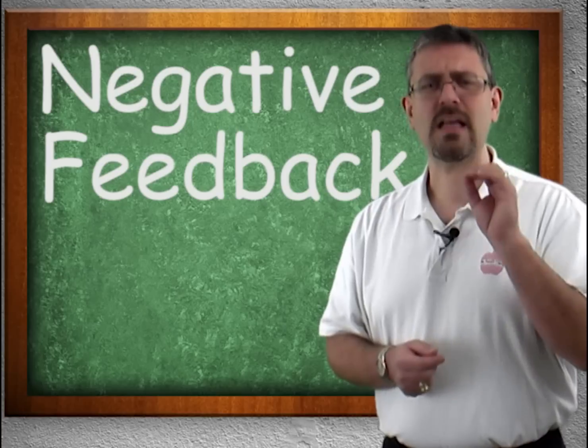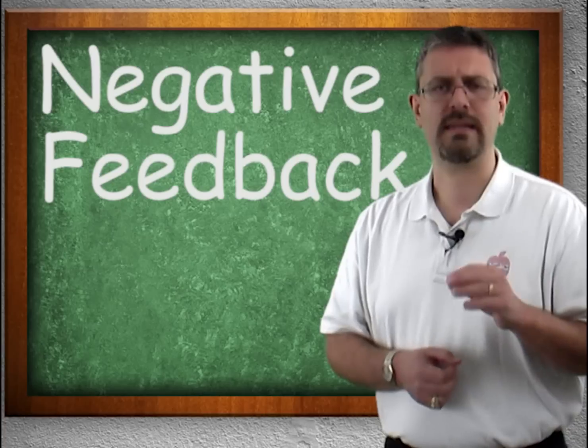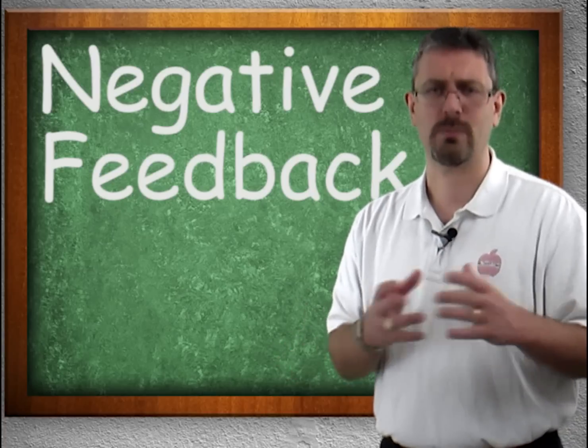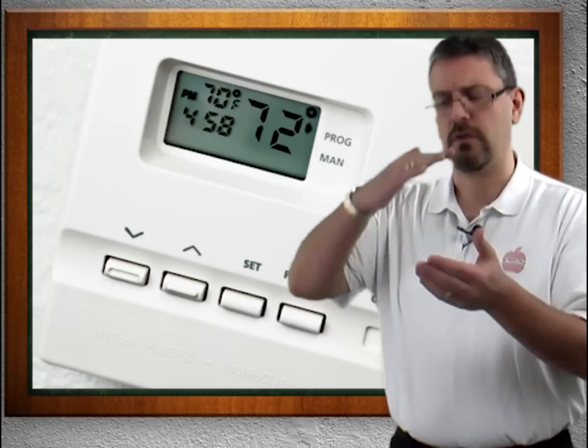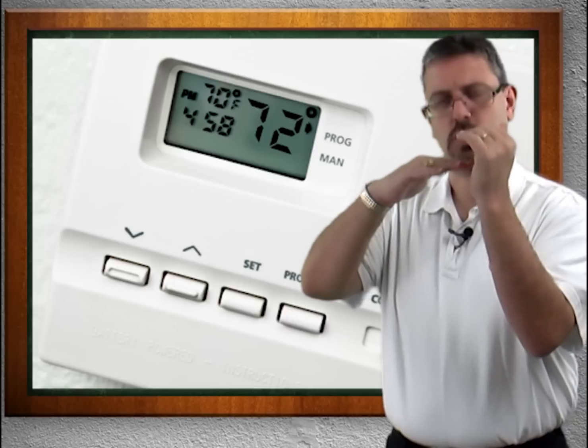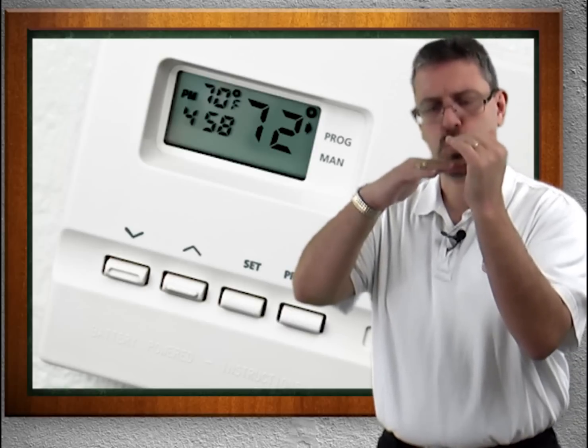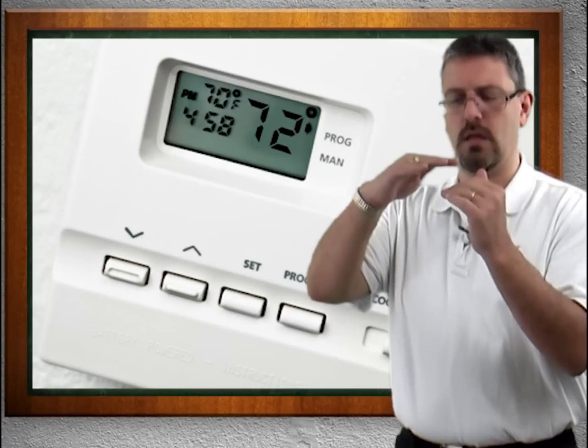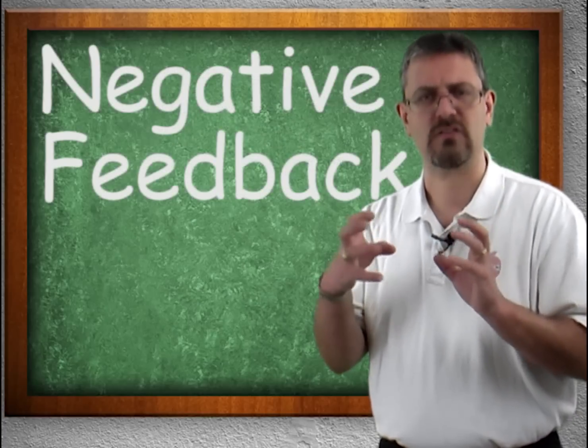Negative feedback is the most common type of homeostasis mechanism — the one you always hear people talk about with the thermostat. You set the desired temperature to, say, 72 degrees. When it starts to get warmer, the air conditioner kicks on, cools things back down to 72, and turns off. If it gets colder, down to 71 or 70, the heat kicks on and brings you back up to 72. That's the more common mechanism found in the body — it will try to bring things back to where they're supposed to be.